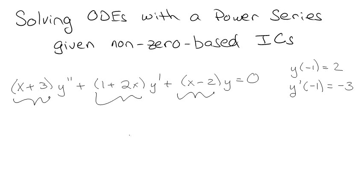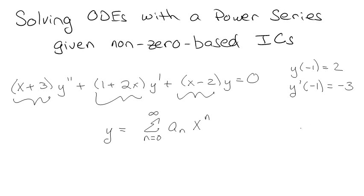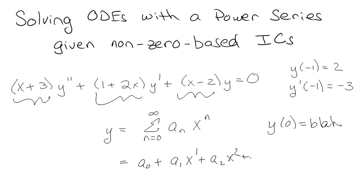You really have to come up with an infinite series solution. Normally we'd say we're just going to guess something like this, and there's a long story about how we make this work — except the problem is in this particular problem we have non-zero based initial conditions. Normally we'd say y at zero equals some value, which is fine because I could say this is a₀ plus a₁x plus a₂x² etc., and whenever I plug in zero I get that value equals a₀.